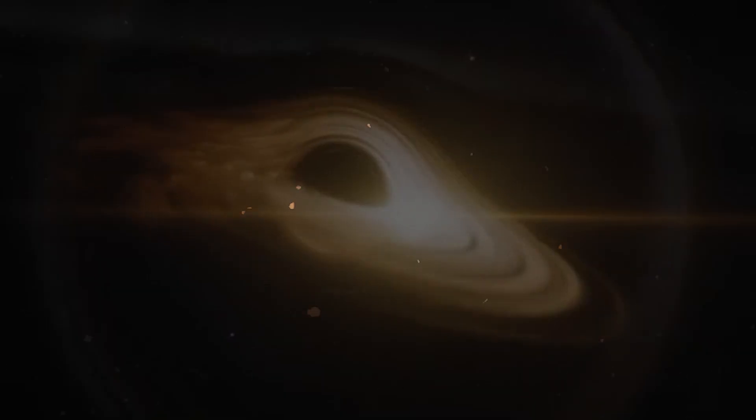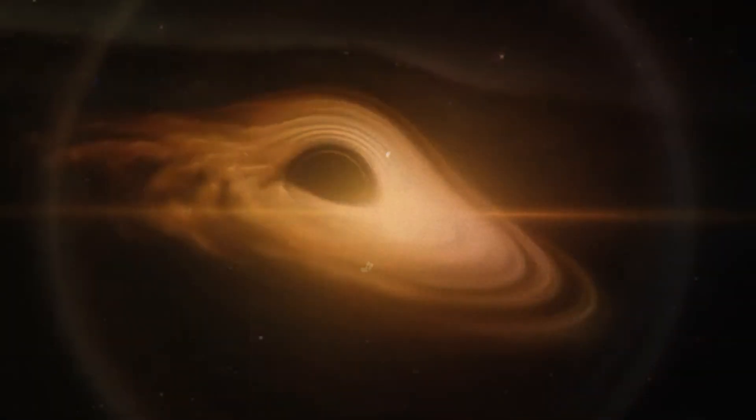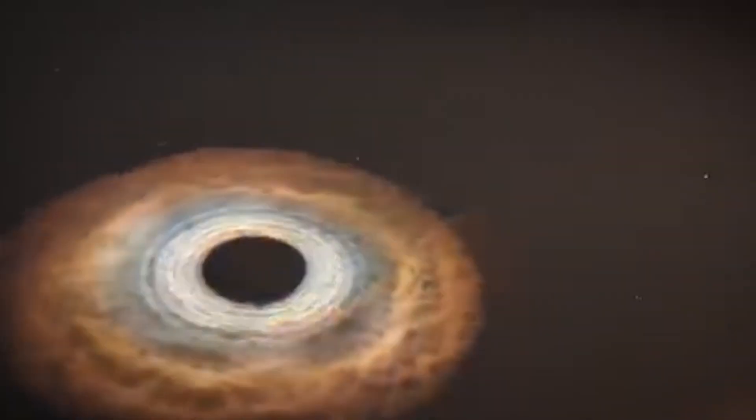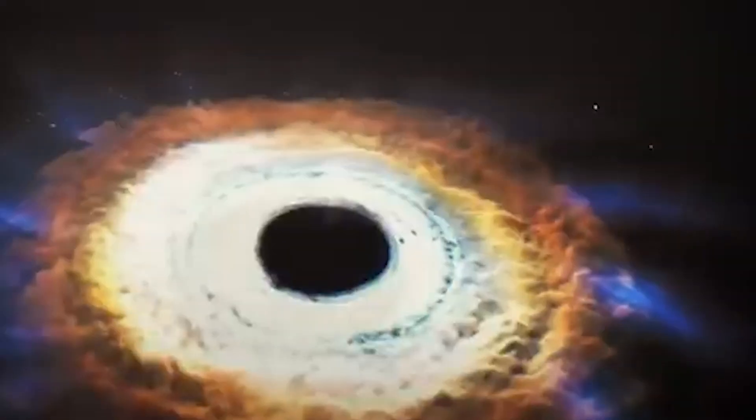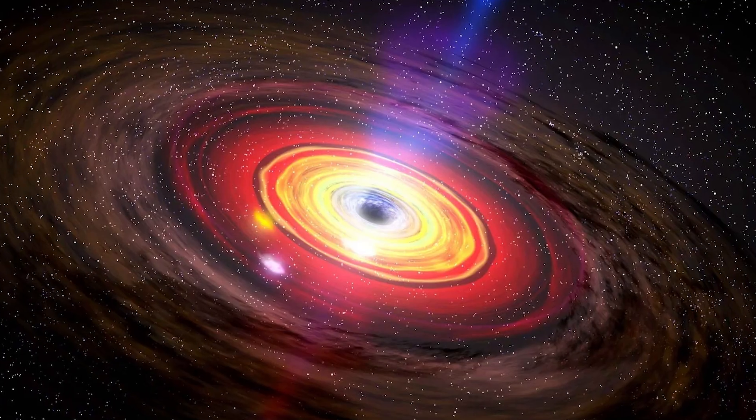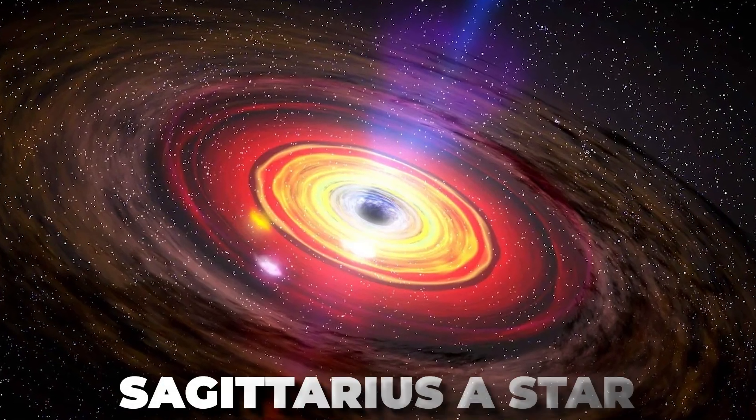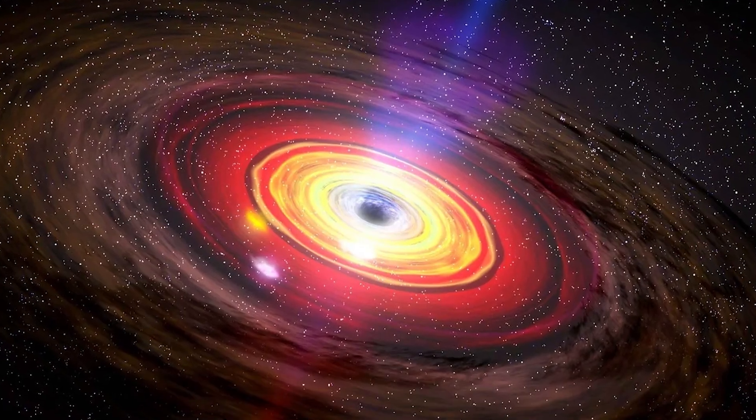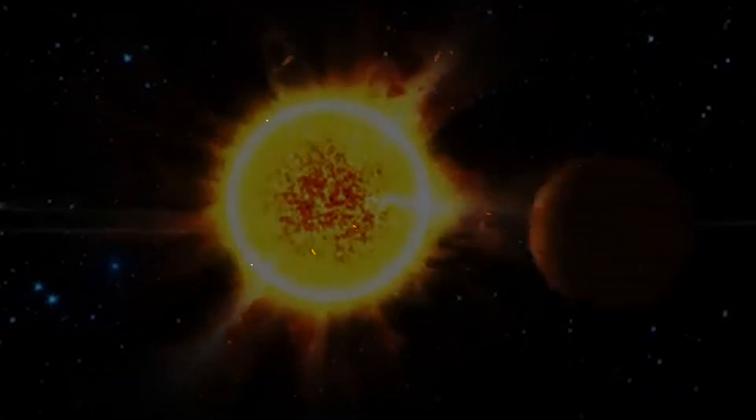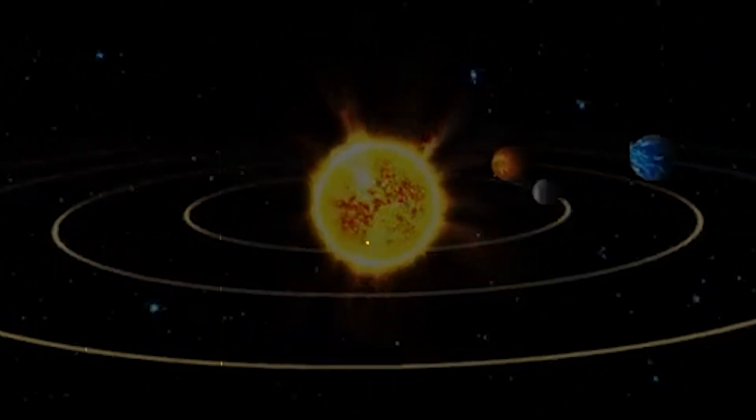Black holes are not all the same size. Stellar black holes form from individual stars and are around 16 kilometers, 10 miles, across. Supermassive black holes can have millions or even billions of times the mass of the Sun. One such giant is Sagittarius A-star, which hides in the center of the Milky Way galaxy. But do not worry, our solar system is at a safe distance from it. Or is it?